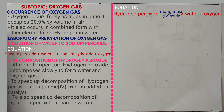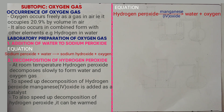Sometimes you may be asked to define the word catalyst. A catalyst is a substance which alters the rate of reaction but remains chemically unchanged at the end of the reaction.